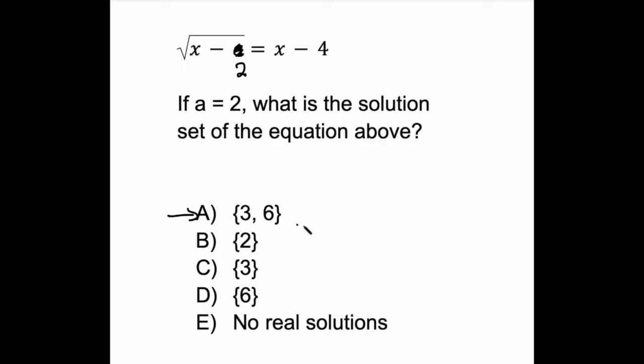So we'll start with answer option A. Answer option A says there are two solutions, 3 and 6. If I plug in 3, what do I get? Well, I get the square root of 3 minus 2, so that's the square root of 1, is equal to 3 minus 4. That is, the square root of 1 is equal to negative 1.